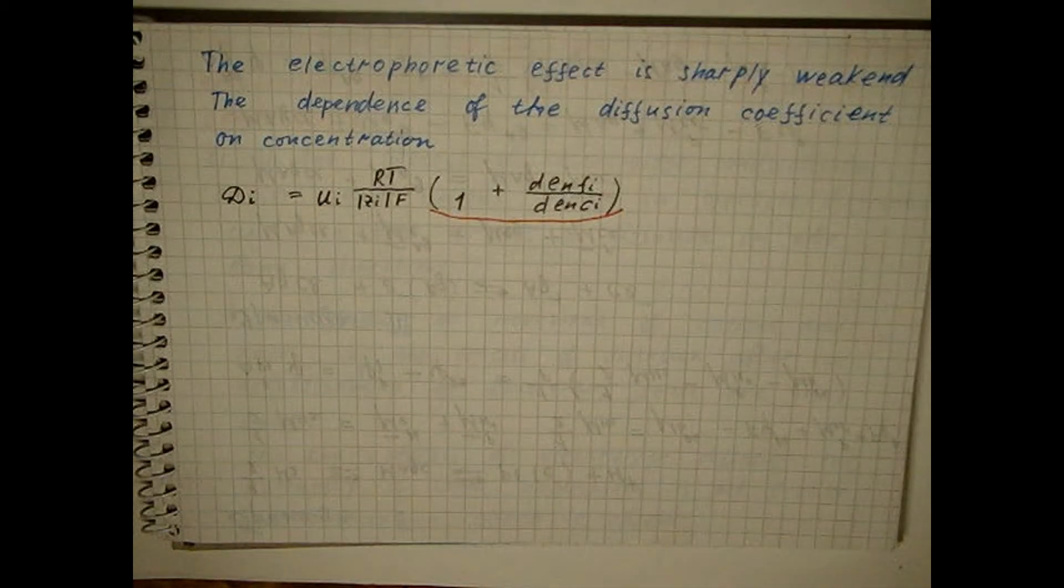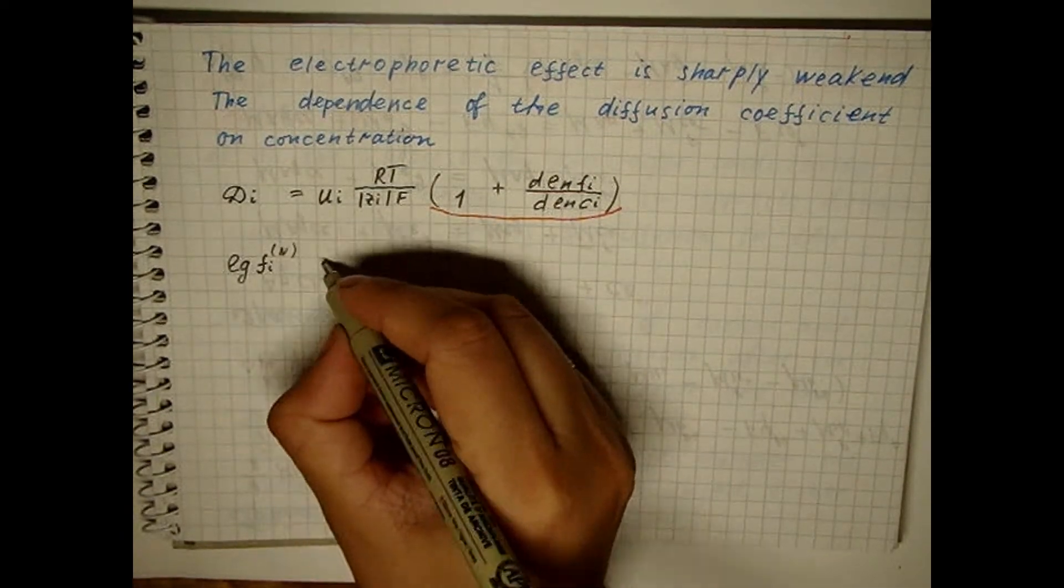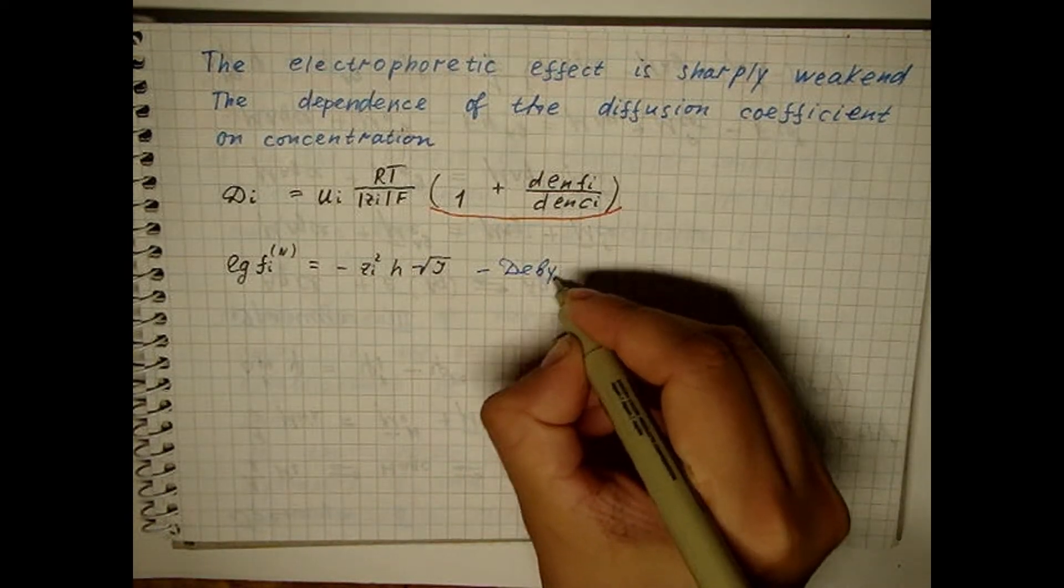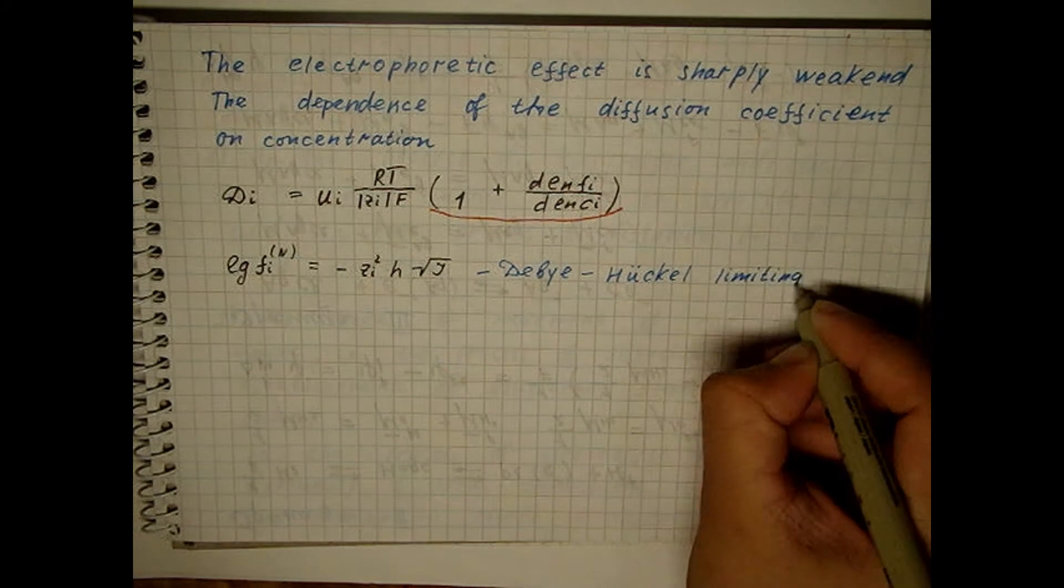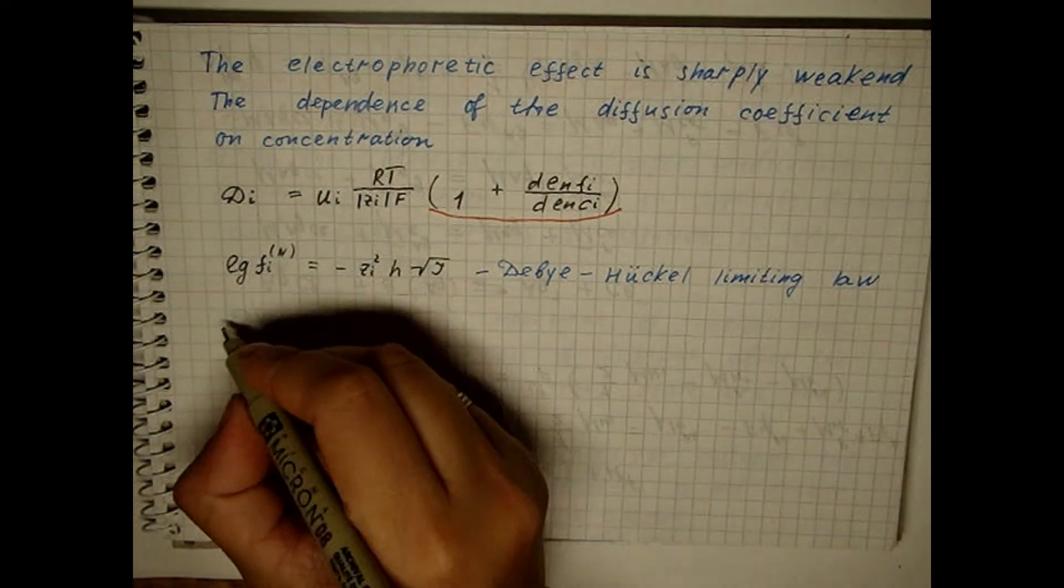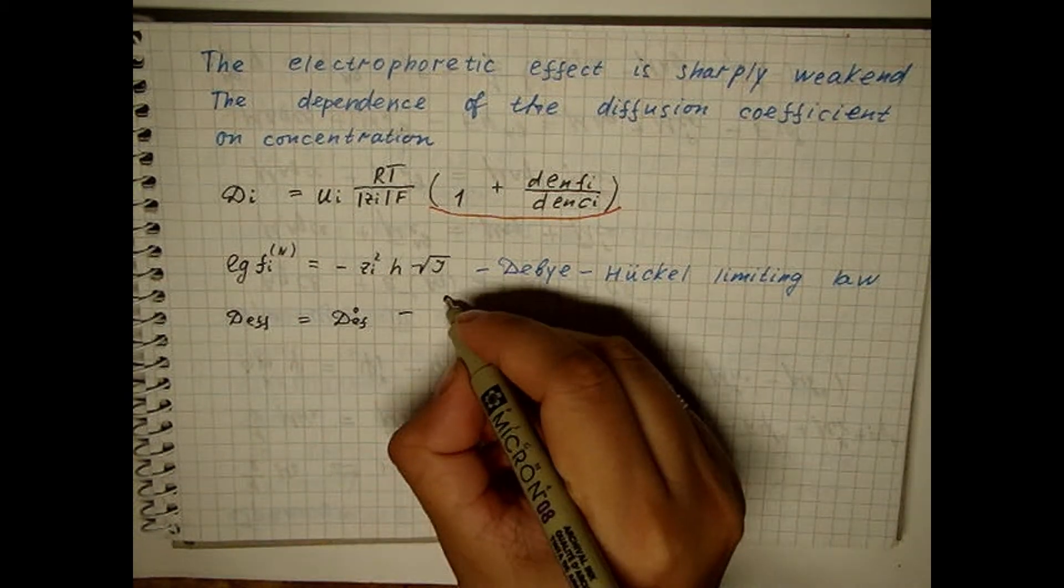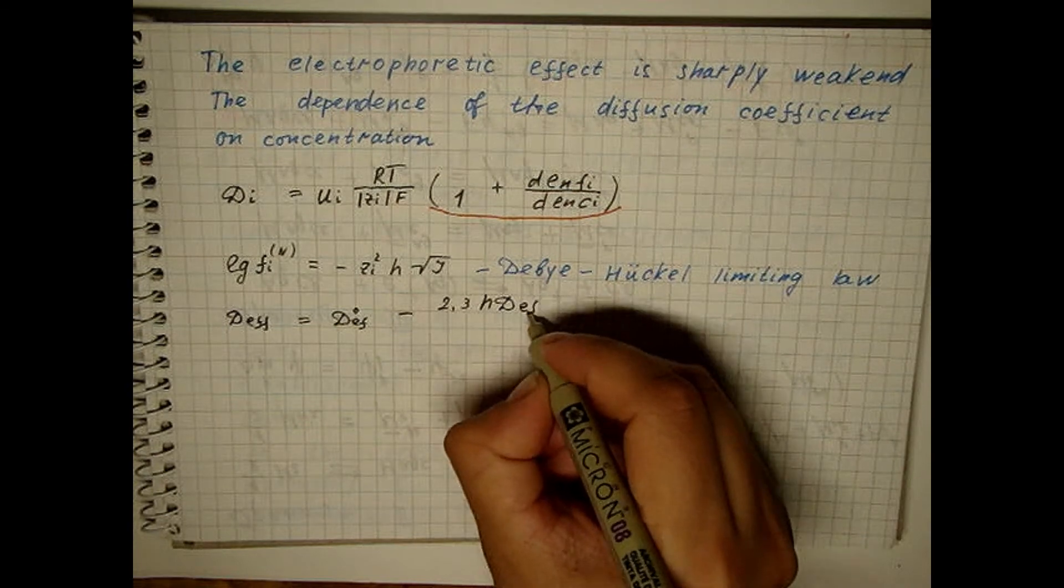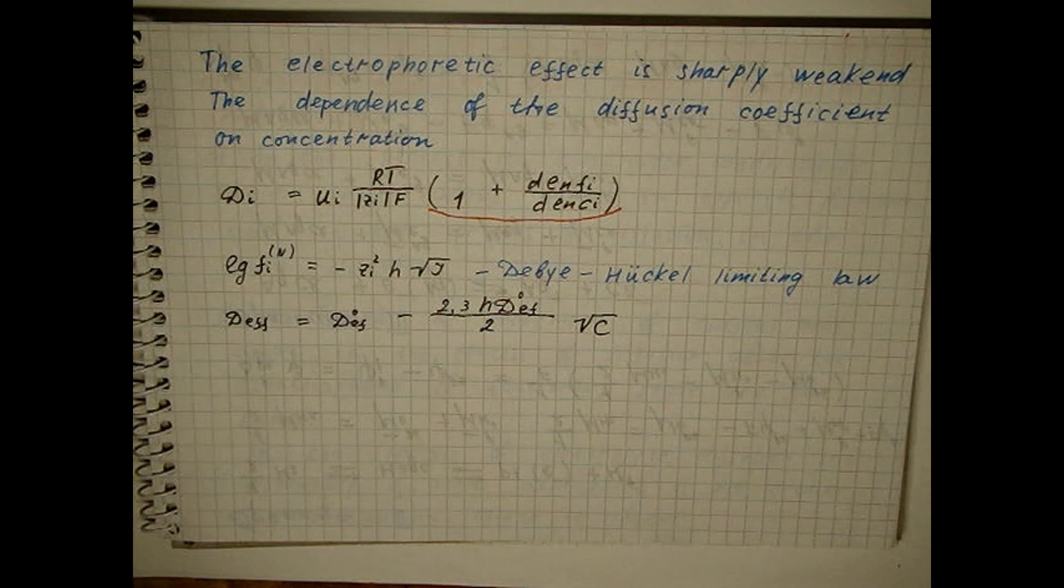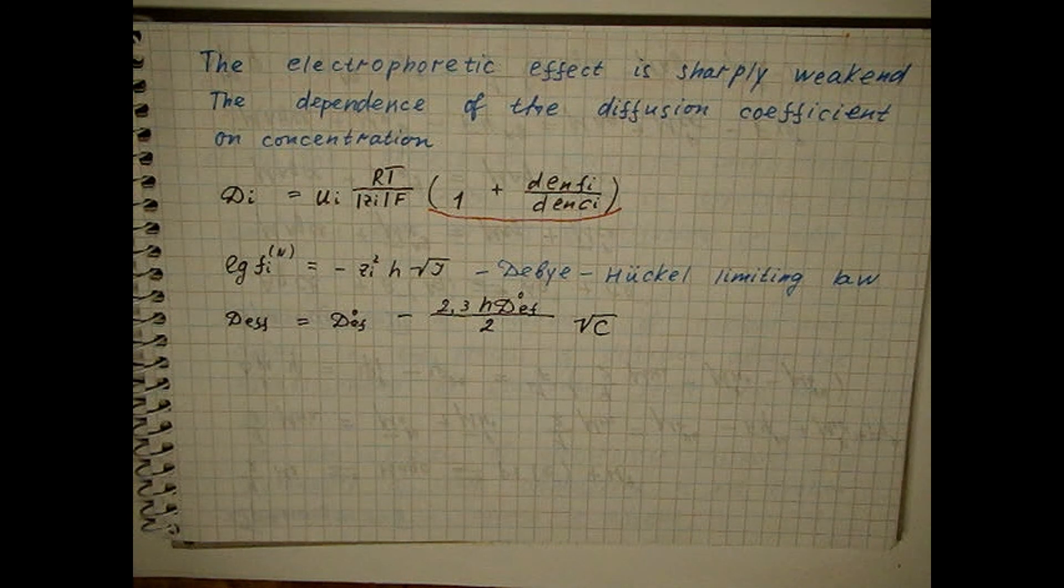In dilute solutions, whether the Debye-Hückel limit law is satisfied. This leads to the equation, which gives the same functional dependence on concentration as the Debye-Hückel-Onsager equation for ion conductivity and equivalent conductivity.